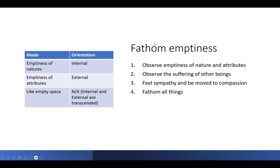The bodhisattva Great Adornment and the others ask a question. They want to know — I'll read from the text: 'World Honored One, for the bodhisattva mahasattvas to quickly accomplish supreme perfect awakening, what approaches to the dharma should they practice? Which approaches allow bodhisattva mahasattvas to accomplish supreme perfect awakening quickly?' The initial answer Shakyamuni Buddha gives is that there's one approach to the dharma that enables bodhisattvas to accomplish supreme perfect awakening quickly. Great Adornment wants to know: what's the approach called, what is the teaching, and how do we practice it? The approach is called innumerable meanings — since that's the name of the sutra. The second and third questions can be combined, as what the teaching is and how you practice it are not really separated in the answers.